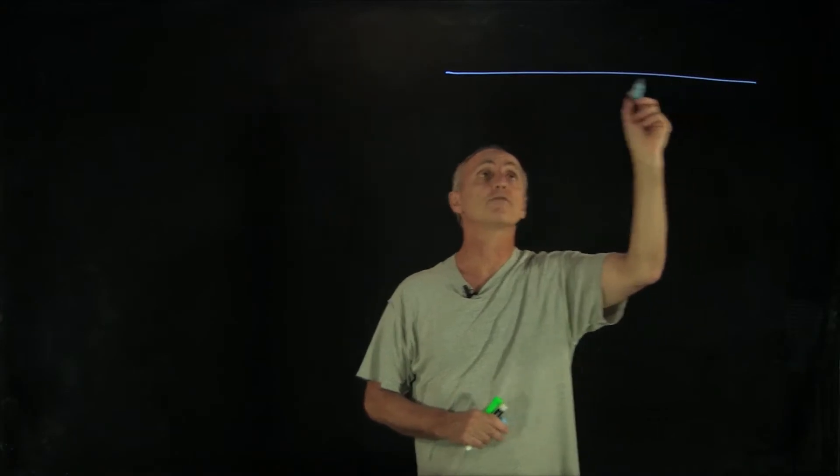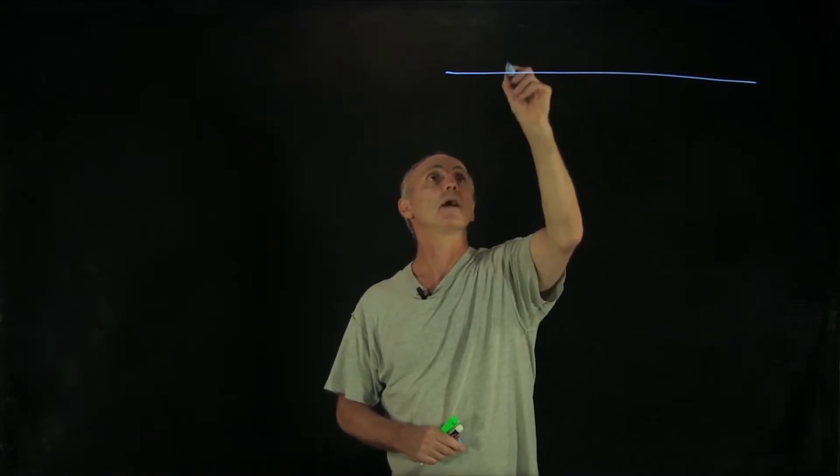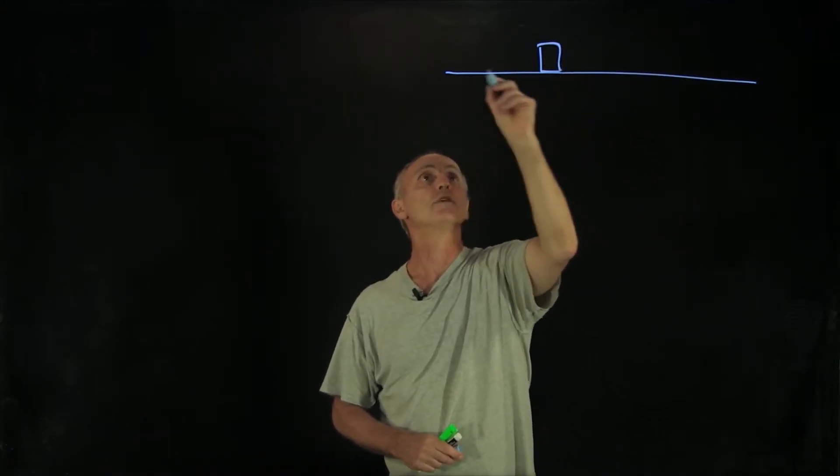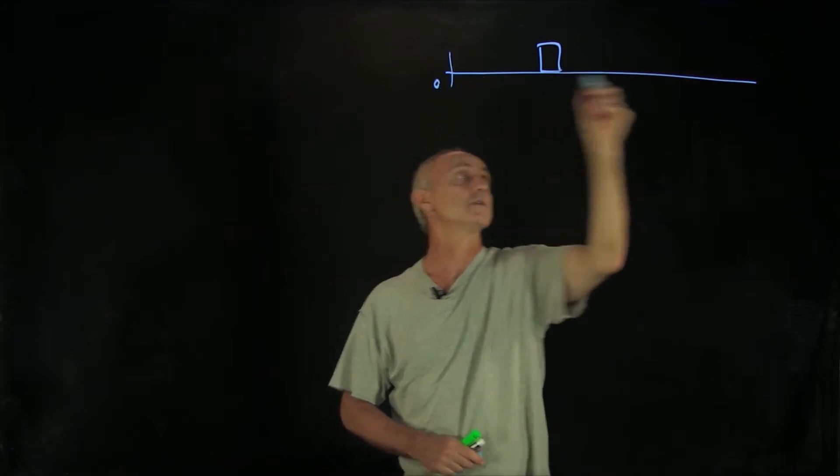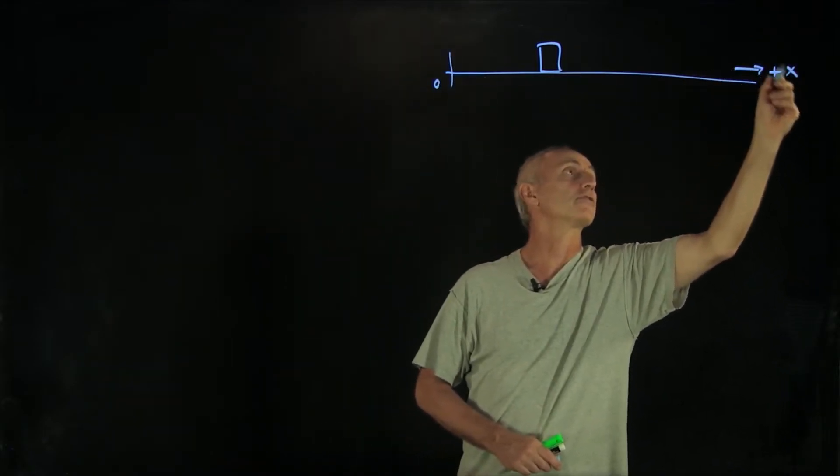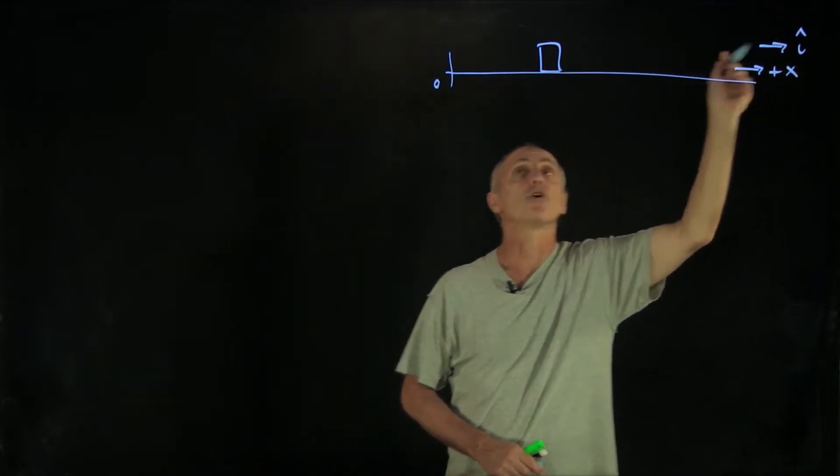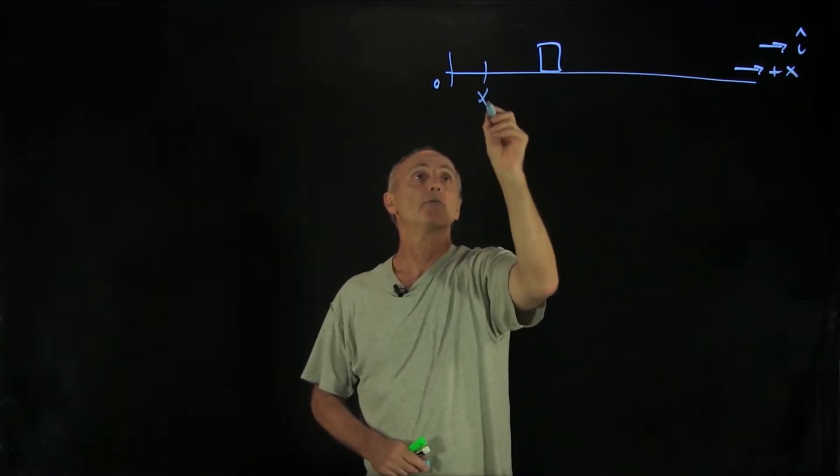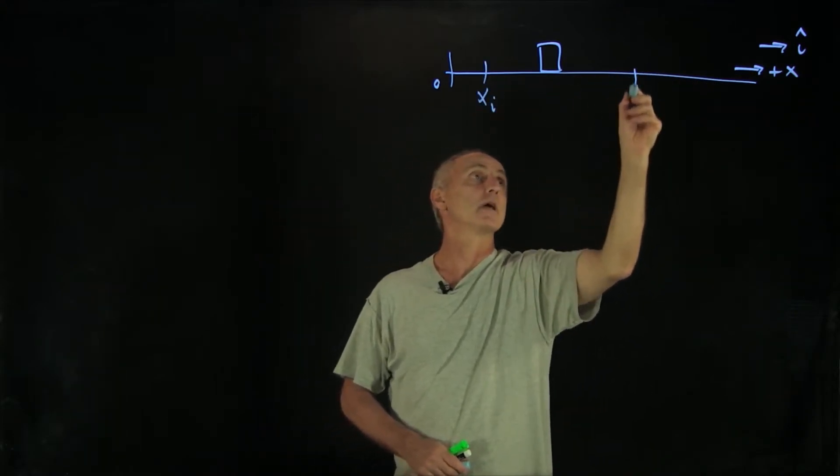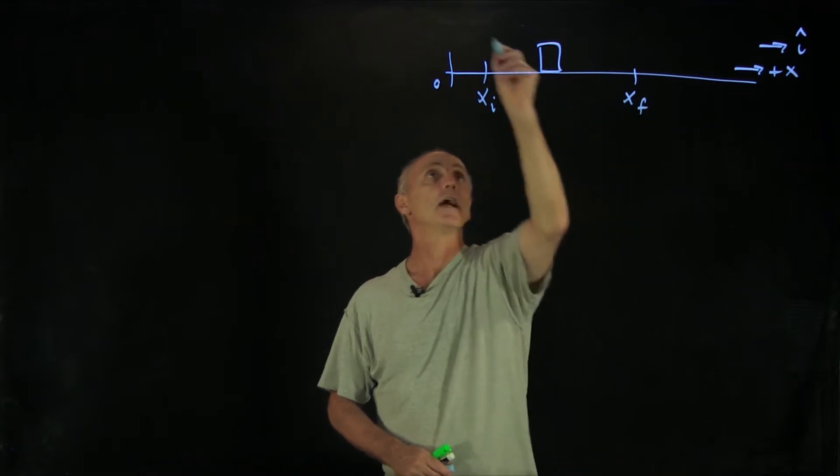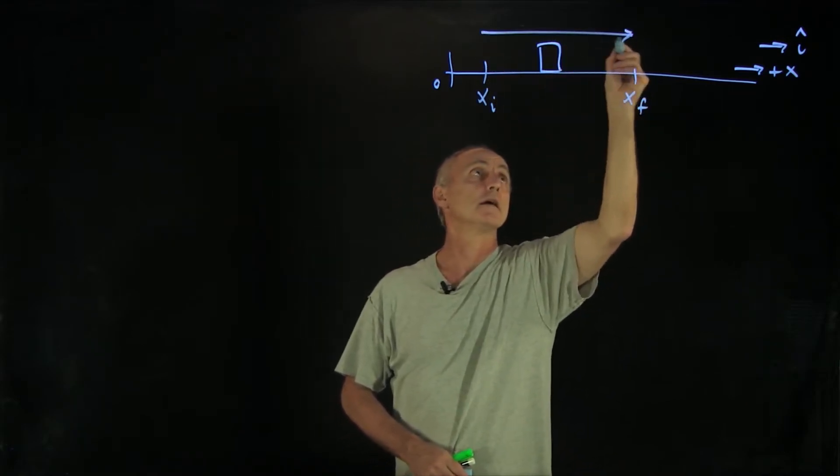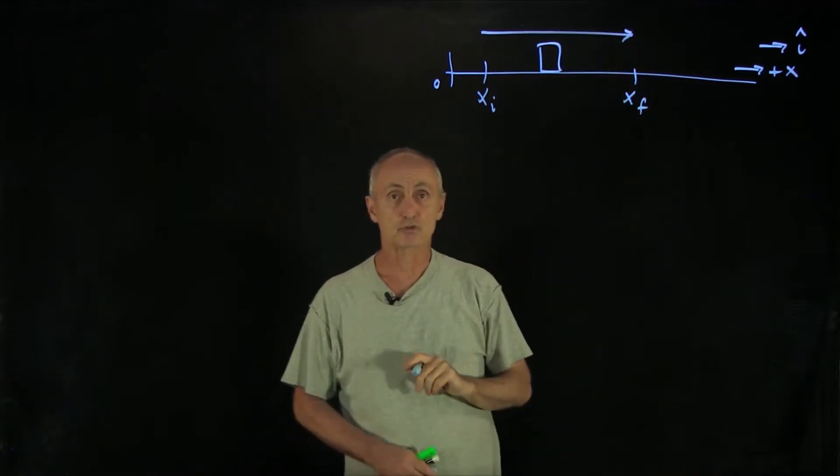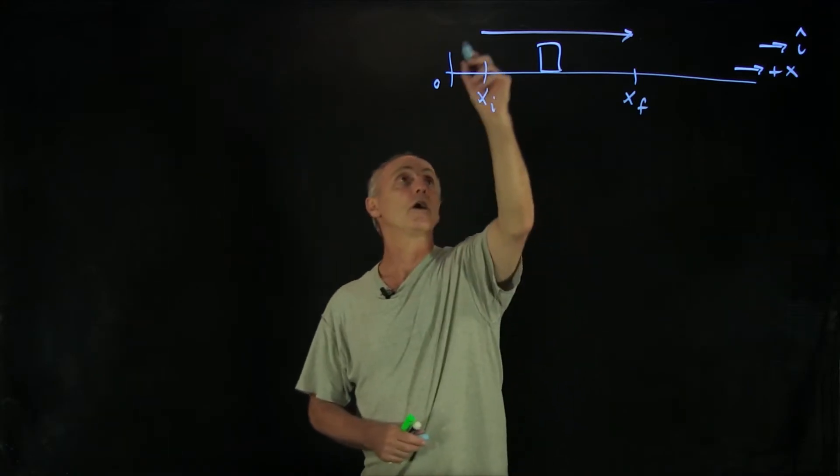Let's consider the following setup. Suppose we have a horizontal surface with friction and an object. We're moving this object, so let's choose an origin. We'll call this plus x, our i hat direction. It's all going to be one-dimensional motion. We're going to move this object from an initial to a final state, moving it directly in a straight line from the initial to the final state. This will be our path one.